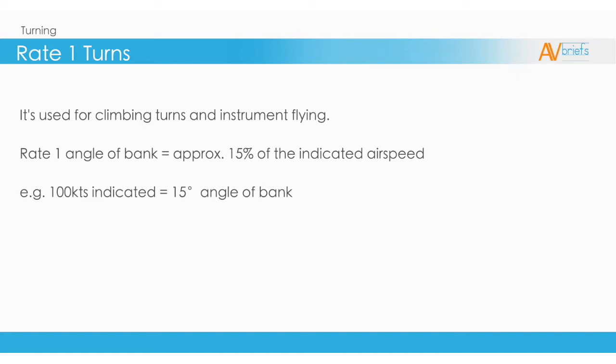To determine the Rate 1 turn angle of bank, simply find 15% of the current airspeed. So if you are flying at 100 knots, it will equal 15 degrees of bank.